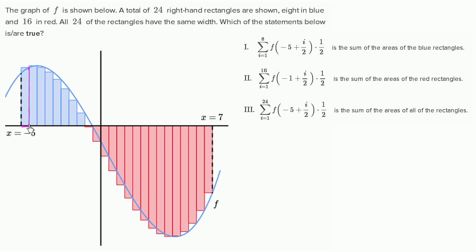You can see this is the right-hand side of this first rectangle. And if you take the value of the function at that point, that is the height of the rectangle. A left-hand rectangle would define the height by the value of the function at the left-hand side of the rectangle. So a left-handed rectangle's height — the first rectangle would look like that. That's what they mean by right-handed rectangle.